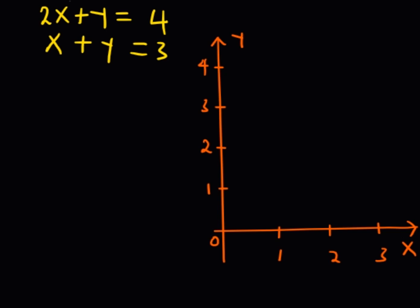Under the graphical approach, we are going to graph the two equations on the same Cartesian plane. Afterwards, we obtain the point of intersection of the two lines, and those are going to be the solutions to the system of simultaneous equations.